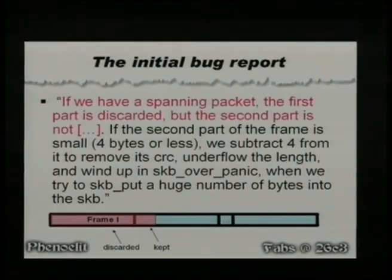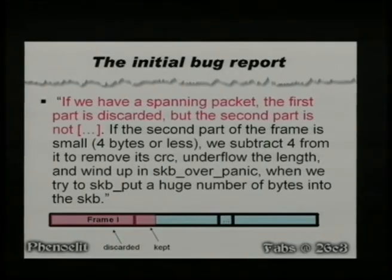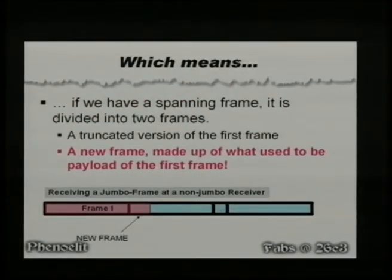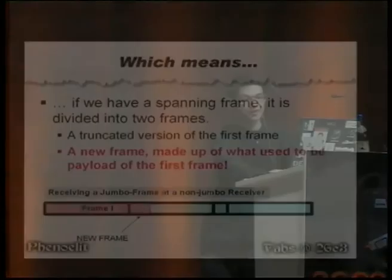Here's a bug from this year: the E1000 Linux driver, July 2009, and they actually proposed a fix — but the fix doesn't fix it, and nobody's reported this, so now we're going to do that. From the initial bug report: if we have a spanning packet — one that goes across multiple buffers — the first part is discarded, but the second part is not; that one's kept. And if that second part is smaller than or equal to 4 bytes in length, we subtract 4 to remove the CRC checksum and actually cause an integer underflow.